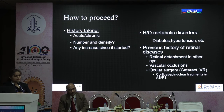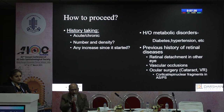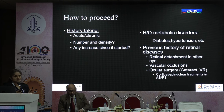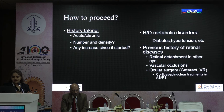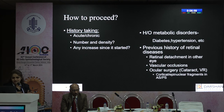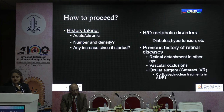In the history, elicit whether it is an acute or chronic problem, the number and density of floaters, and any increase since onset. Ask about metabolic disorders like diabetes — which could cause vitreous hemorrhage — or hypertension. Ask about any previous history of retinal disease such as retinal detachment in the other eye, vascular occlusions, and any ocular surgery like cataract or vitreoretinal surgery.